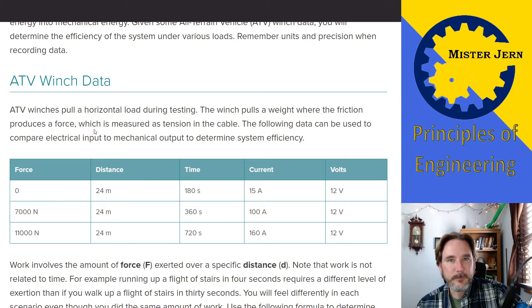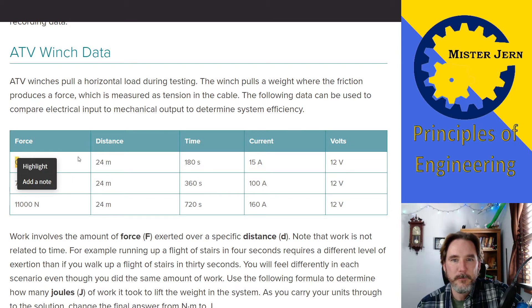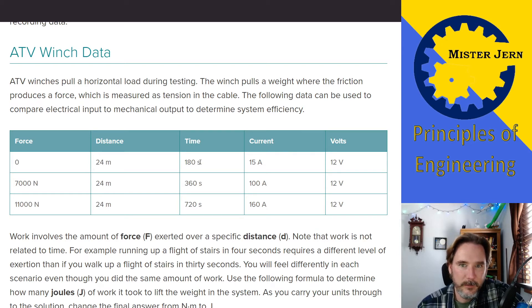So it's a nice little test for what we're going to be doing with this stuff. Here's three tests that were done in which the winch applied zero force. For 24 meters, it took 180 seconds. There was a current of 15 amps and a 12-volt battery.